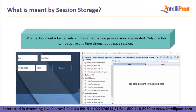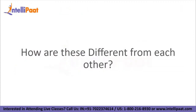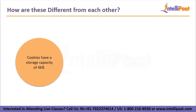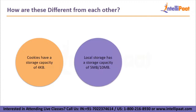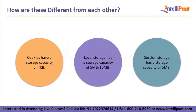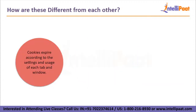How are cookies, local storage, and session storage different from each other? We have five criteria. The first is storage capacity: cookies have a storage capacity of around 4KB; local storage has a capacity of 5MB or 10MB; and session storage has a capacity of 5MB.